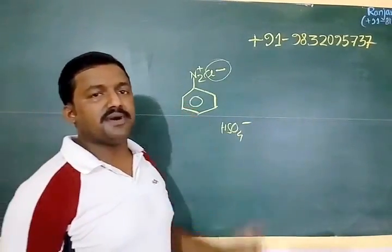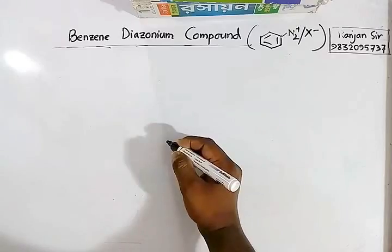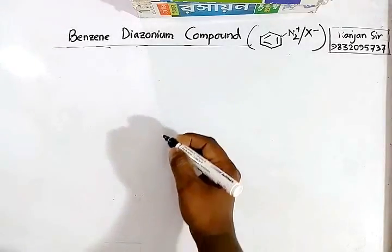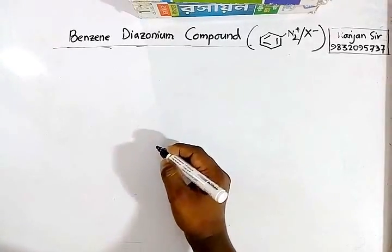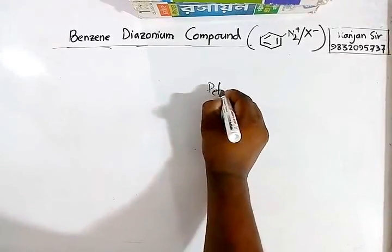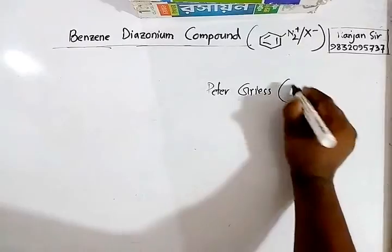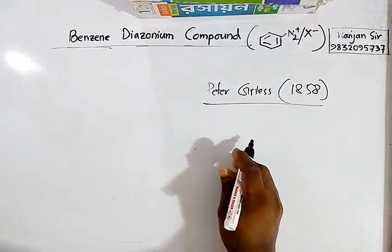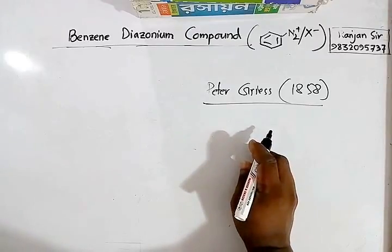Benzene diazonium chloride compounds are not naturally occurring. They were first synthesized by the scientist named Peter Griess in the year 1858.